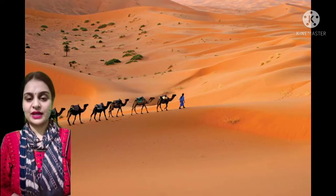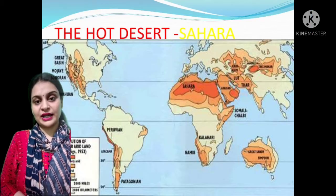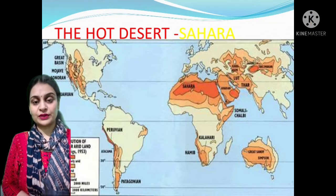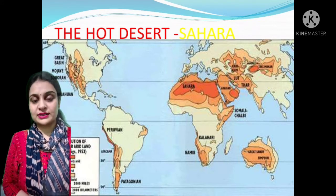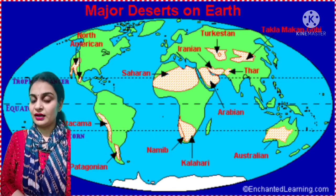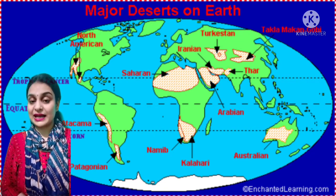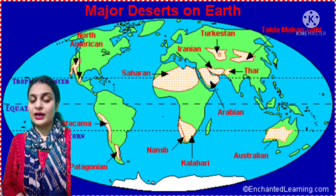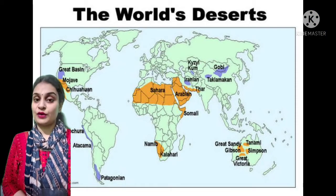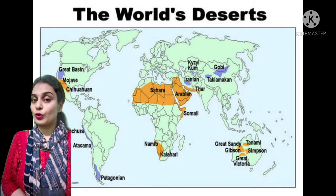There are different types of deserts. The first type are hot deserts, which are found between 15 degrees to 30 degrees north and south of the equator. Some examples of hot deserts are the Sahara Desert in Africa, the Thar Desert in India, and the Mexican Desert in Mexico. The second type is called temperate desert, with examples being Ladakh and the Gobi Desert.